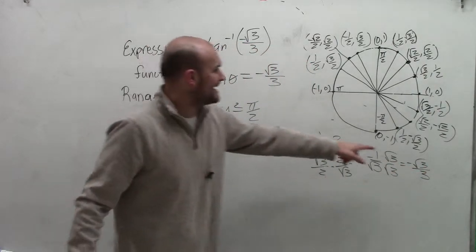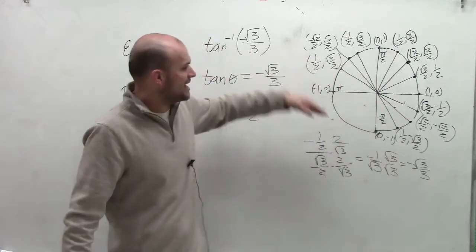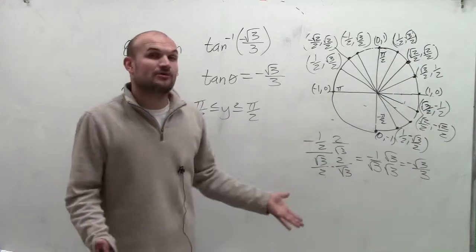So therefore, at that angle, which is here, which is negative pi sixth, I get a value of negative square root of 3 over 3, which is exactly what I'm looking for.